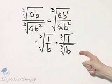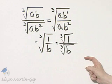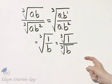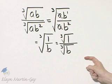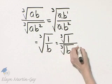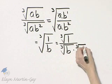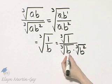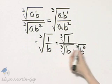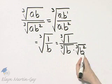Notice if I multiply by the cube root of B, I would have as a product the cube root of B times the cube root of B, or the cube root of B squared, and B squared is not a perfect cube. I'll need to multiply by the cube root of B squared. Why? Because this becomes the cube root of B cubed, and B cubed is a perfect cube.